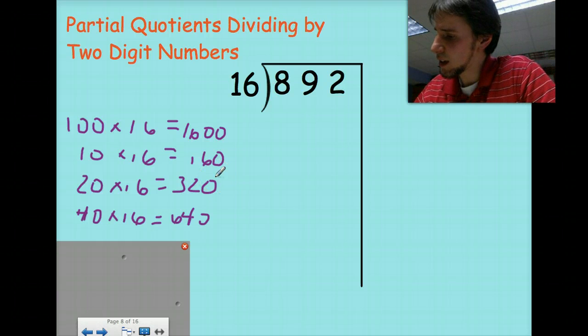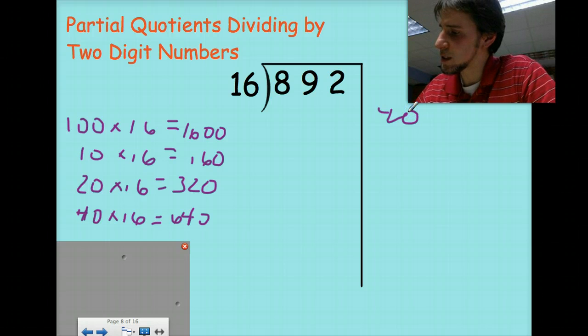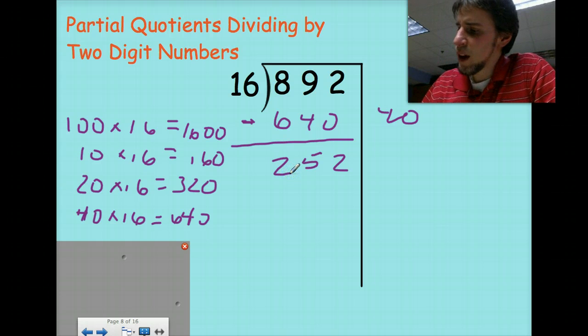So let's take that forty times sixteen. Remember forty times sixteen is worth six hundred and forty. Subtract that out and then I can do two, five and two. All right, so I've used my forty.